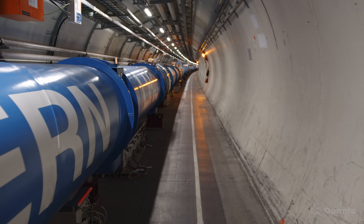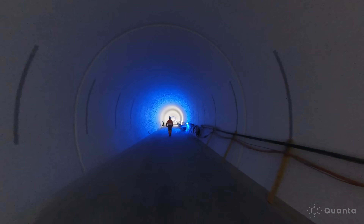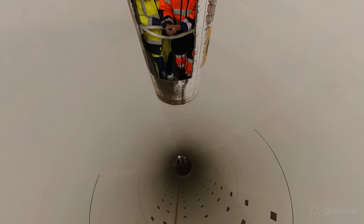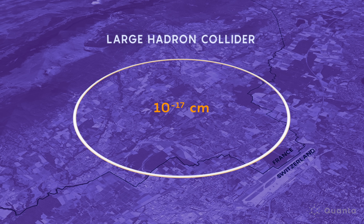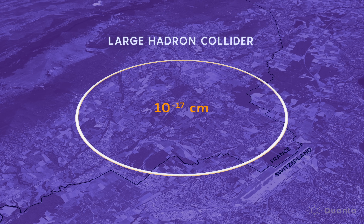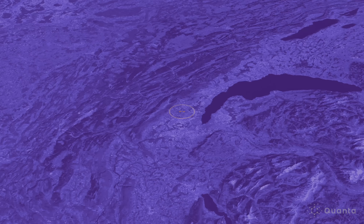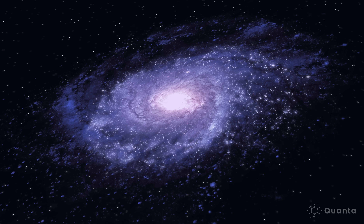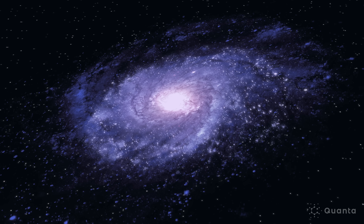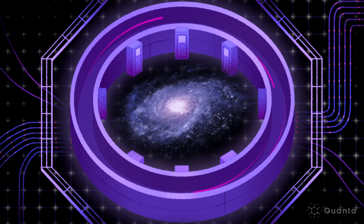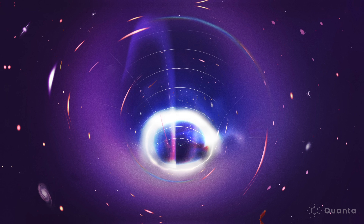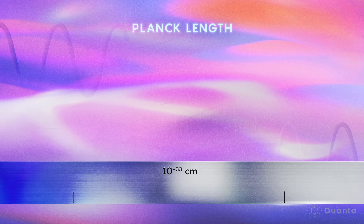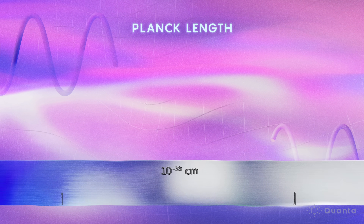In the quest to understand what happens at very small distances, experimental physicists have built powerful particle accelerators. Today, the Large Hadron Collider at CERN can probe physics at 10 to the minus 17 centimeters. But to see what's happening at the Planck length, you'd need a particle collider a thousand trillion times more powerful — one about as big as our entire Milky Way galaxy. And even if we could build one, the collisions it would produce would put so much energy into such a tiny region of space that the region would collapse into a black hole. There's simply no operational way of probing space-time below this length. That suggests that space-time below the Planck length doesn't have meaning.